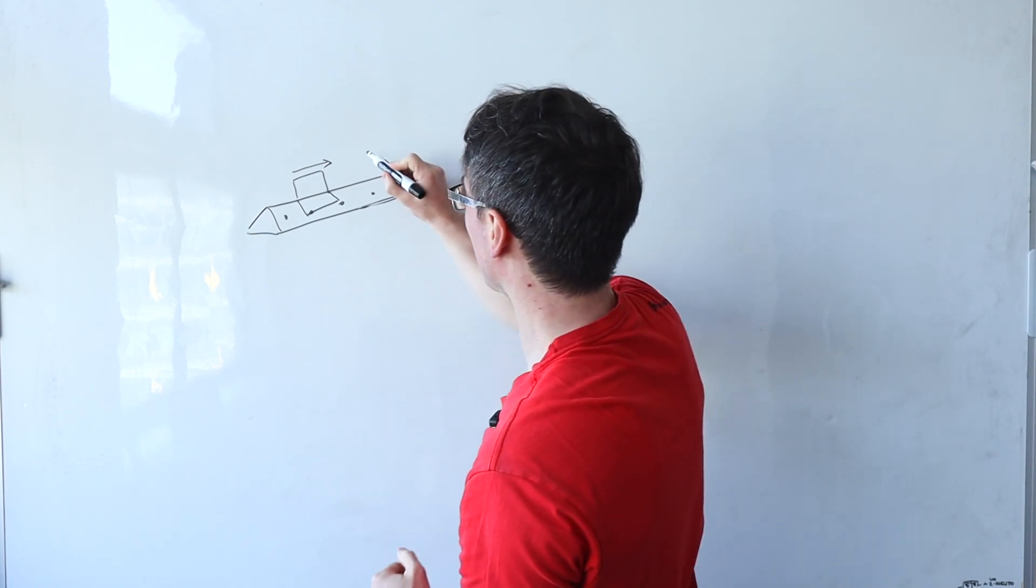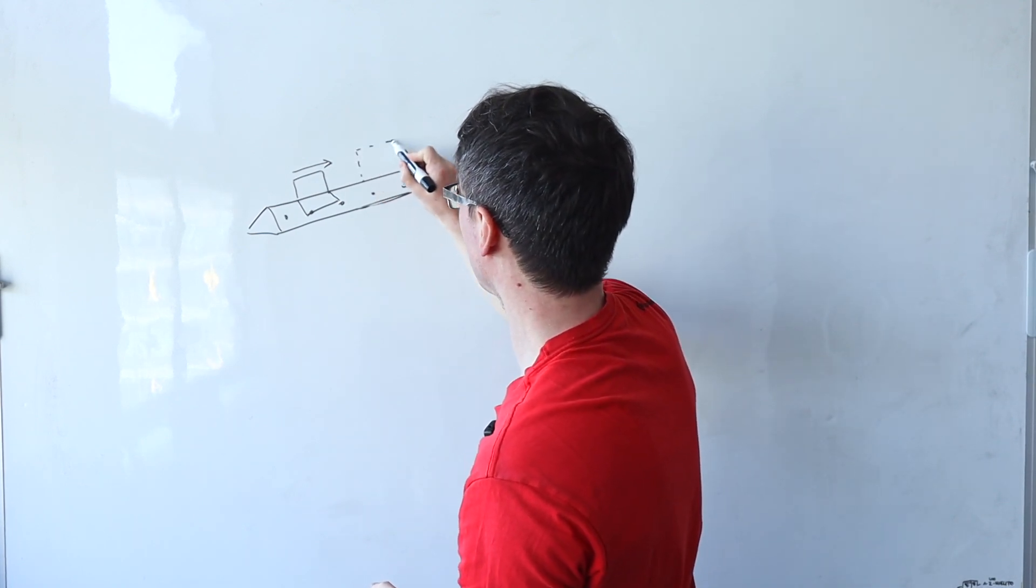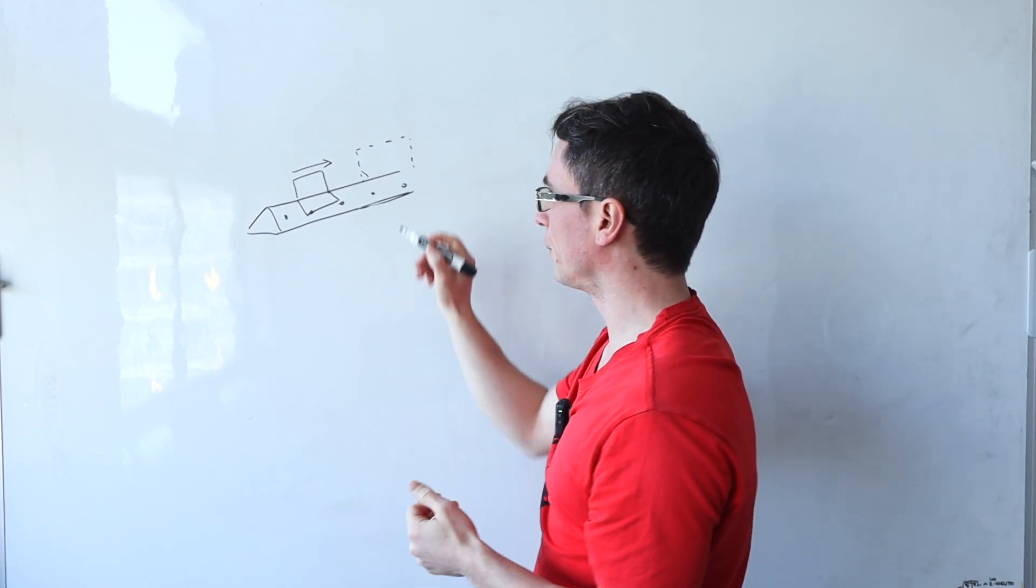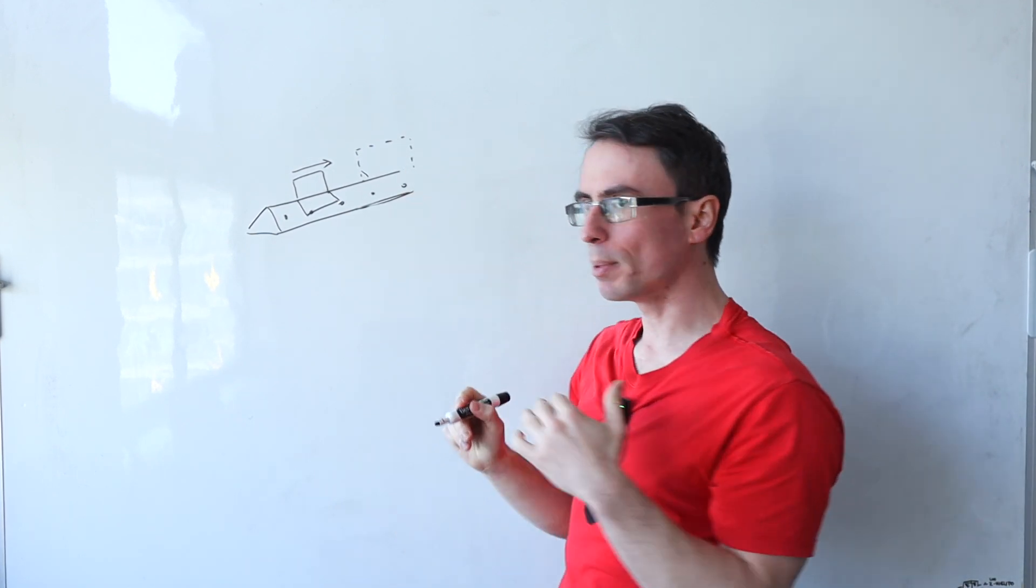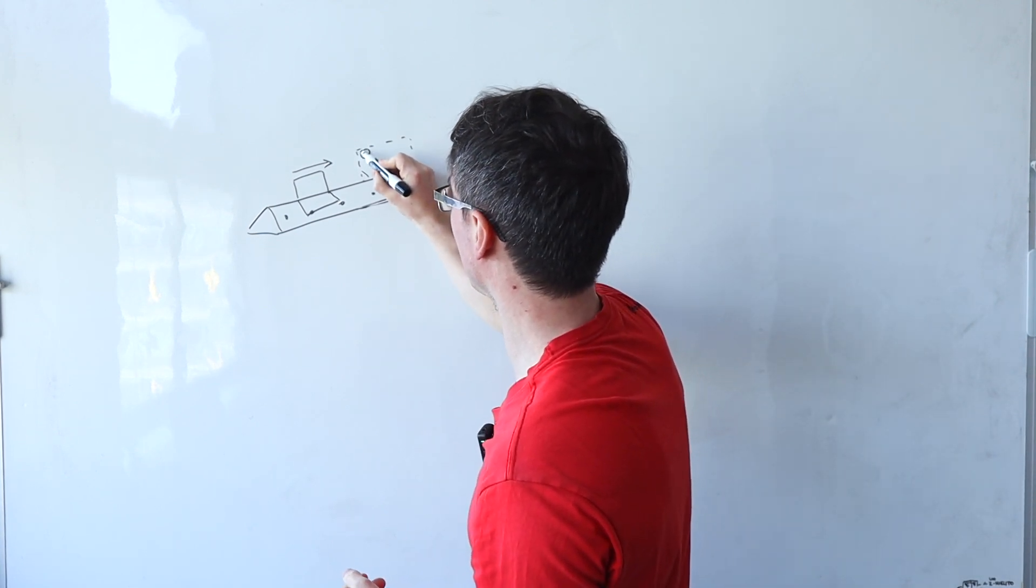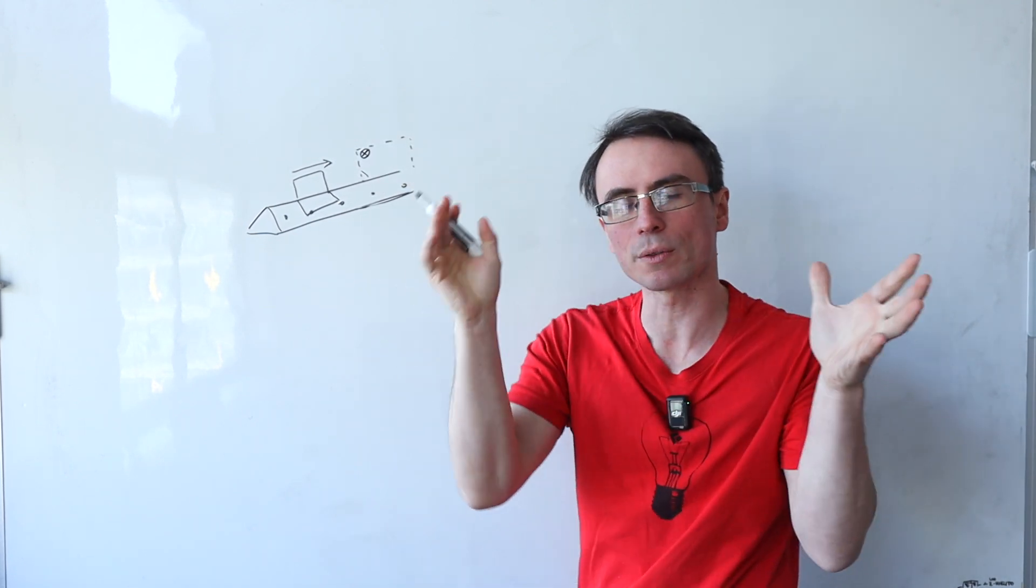As the glider is moving along, it's going to enter a region of a magnetic field. Now this magnetic field here will be perpendicular to the direction of motion, so it could be, let's say, into the board or out of the board.